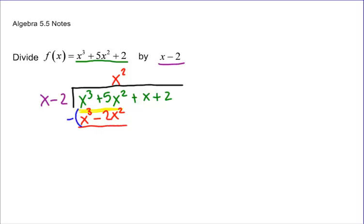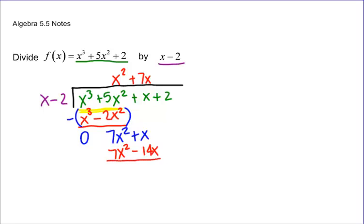We subtract the whole thing. x cubed minus x cubed is zero — that's just what we need. Then 5x squared plus 2x squared is 7x squared. Bring down x. Now, what times x is 7x squared? 7x. So 7x times x is 7x squared, and 7x times negative 2 is negative 14x. Subtract the whole thing — use parentheses so you don't make a mistake. 7x squared minus 7x squared is zero. Then x plus 14x is 15x. Bring down the 2.